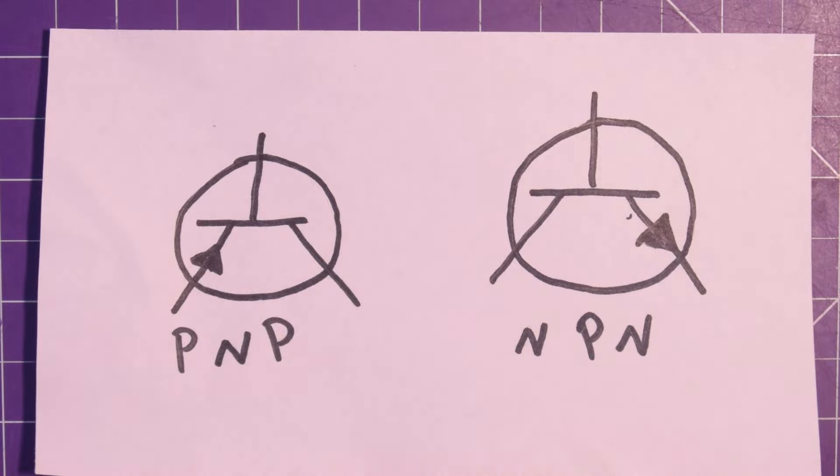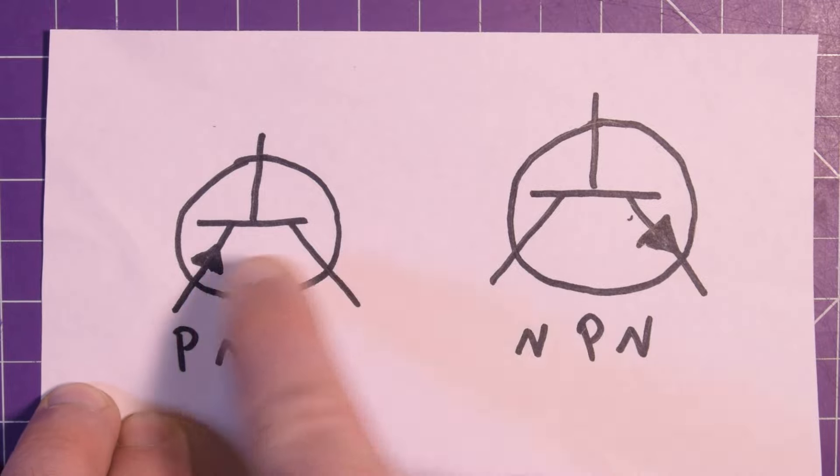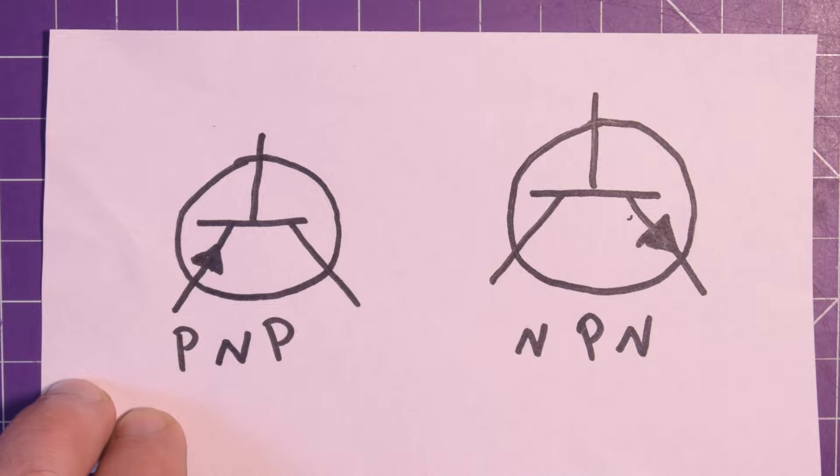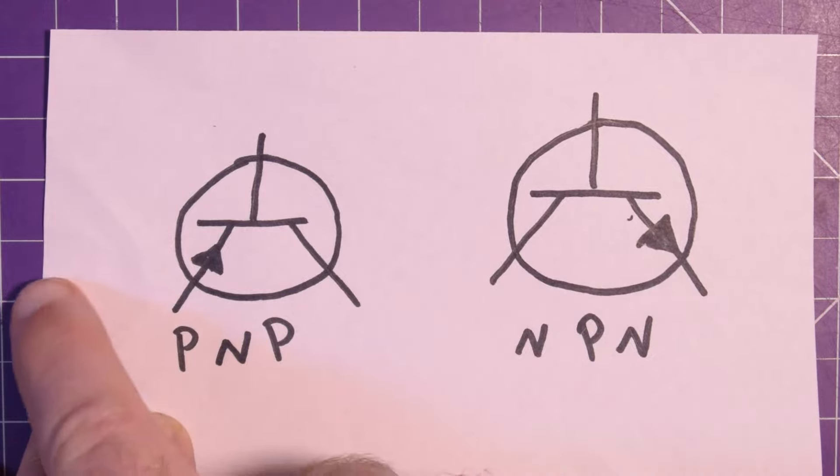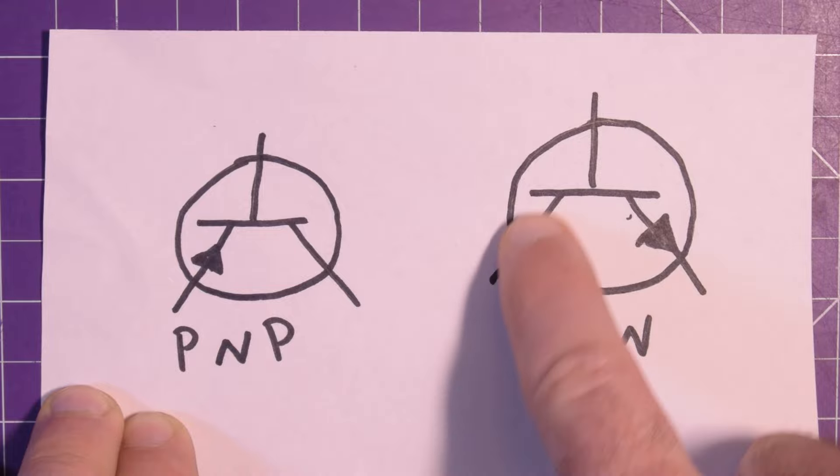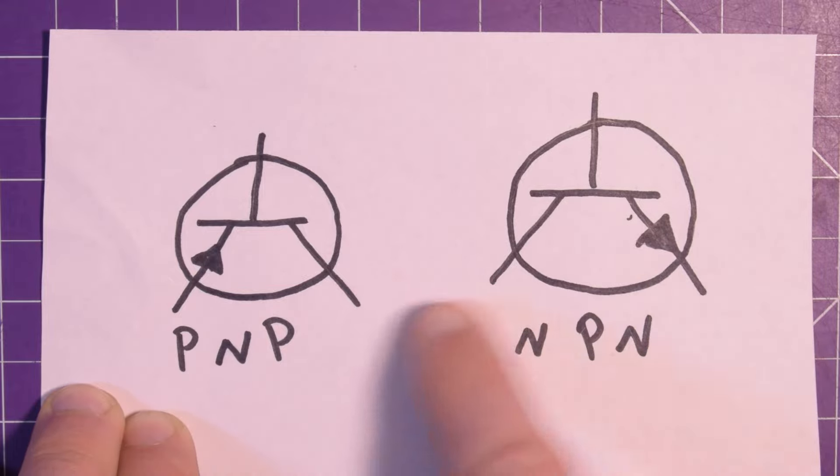They both kind of do the same thing. As you can see on these diagrams there's an arrow, but it's at a different place on each transistor and that arrow denotes the direction that current can flow through the transistor. So basically the switch is from this leg to this leg, so it goes up through here and out, and same thing up through here and out in this direction.